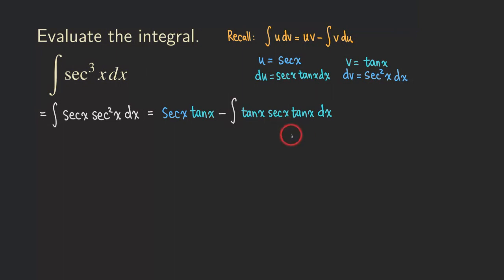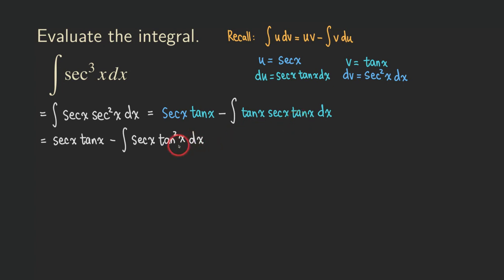So now we can simplify this expression. We are going to get secant x tangent x, minus the integral. Multiplying the tangent functions together we get tangent square, and then we put the secant x in the front. So now we have this function right here. You may say, what do we do next? We can actually replace this tangent square x by something else.